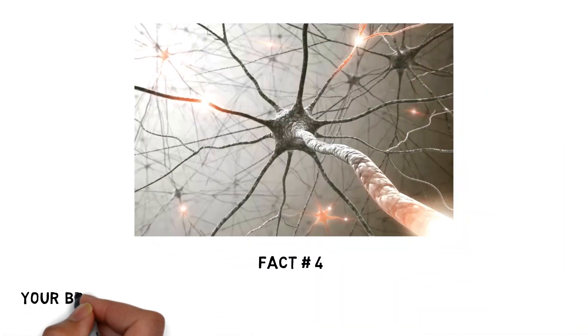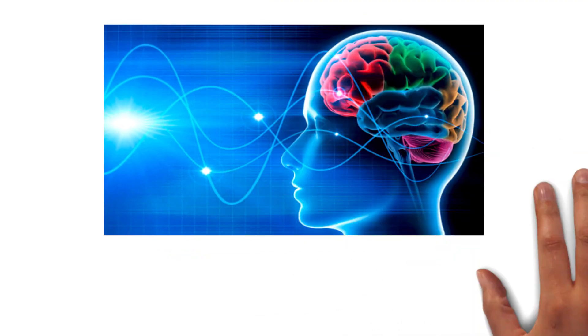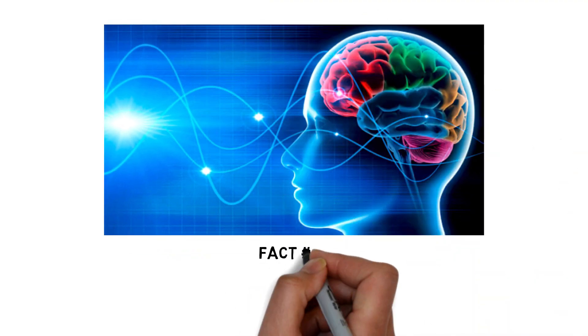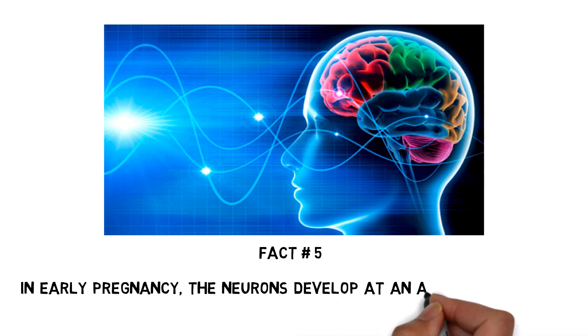Fact number 4: Your brain contains approximately 100 billion neurons. Fact number 5: In early pregnancy, the neurons develop at an alarming rate of 250,000 per minute.